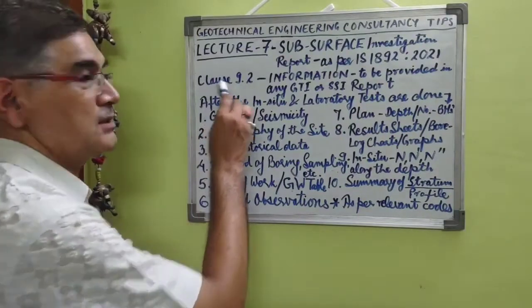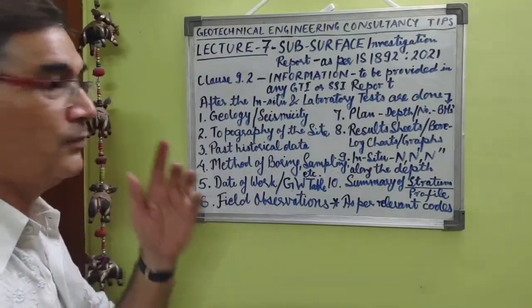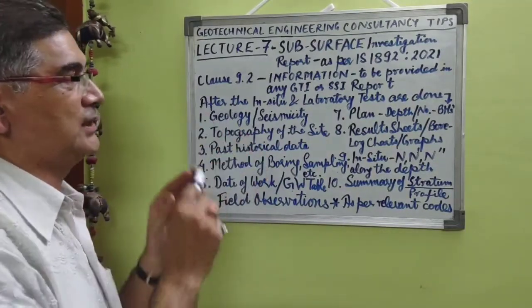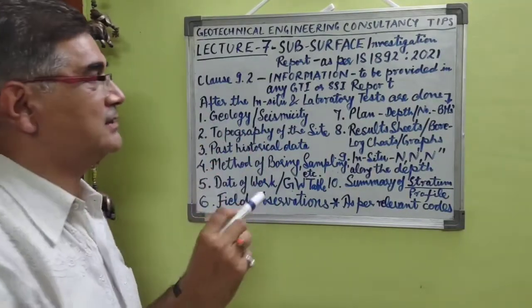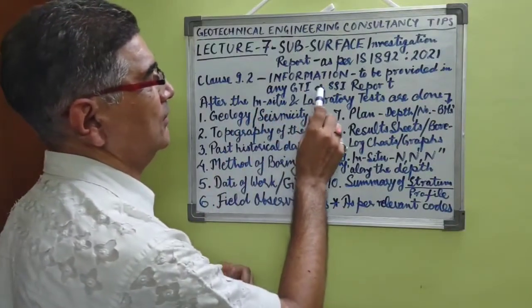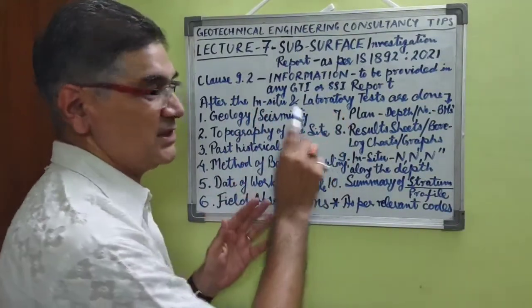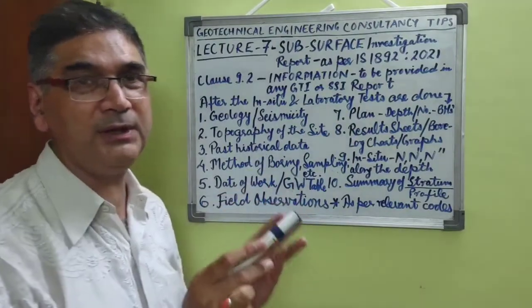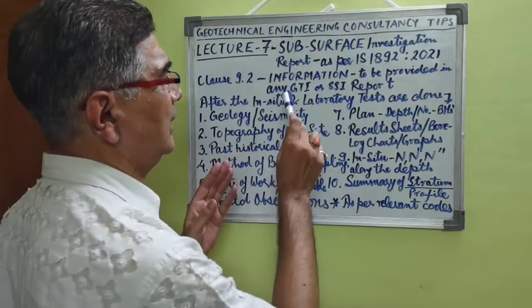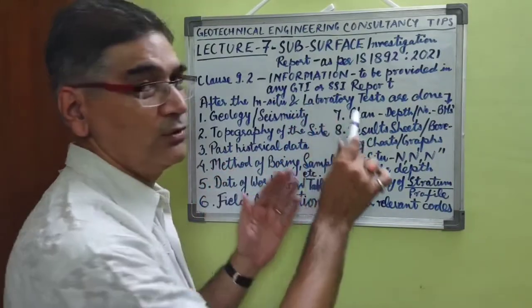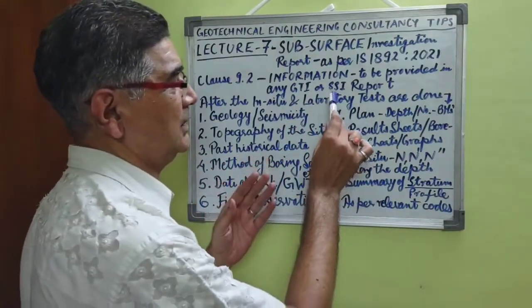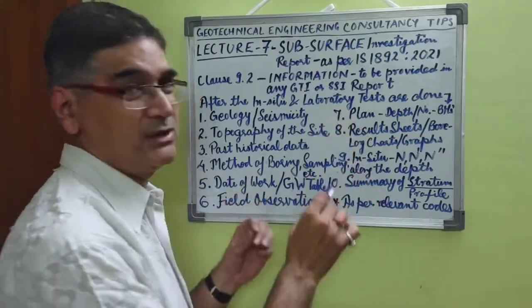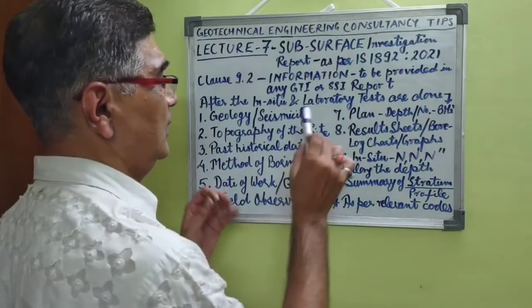Under clause 9.2, it states the information which must necessarily be the component of the geotechnical investigation report — what you can call a subsurface investigation report, soil investigation report, or soil testing report. What should this report essentially comprise of?